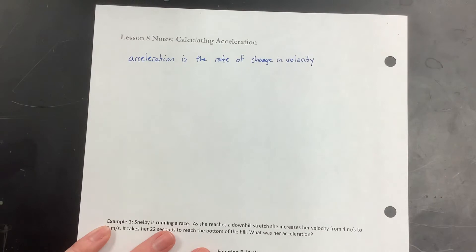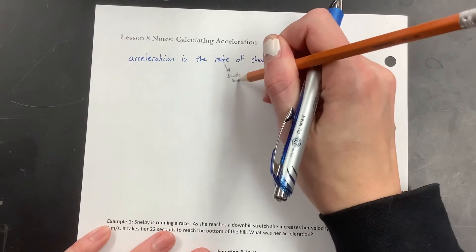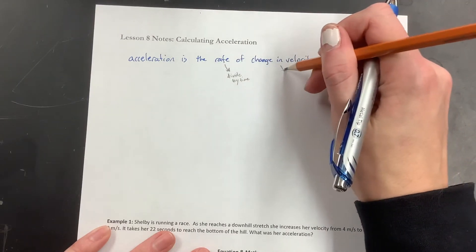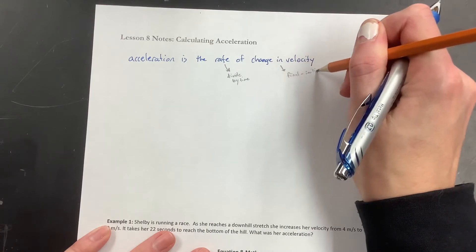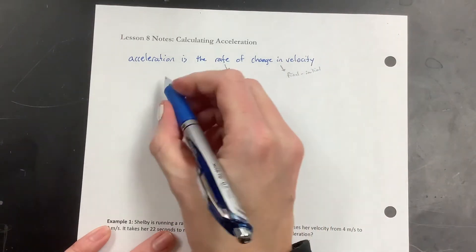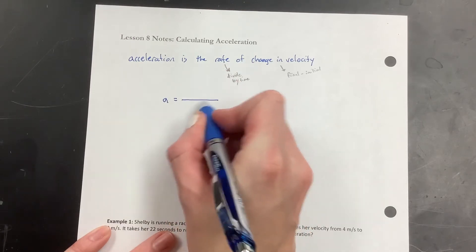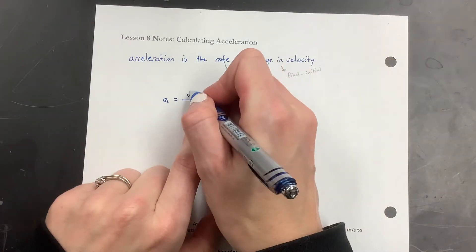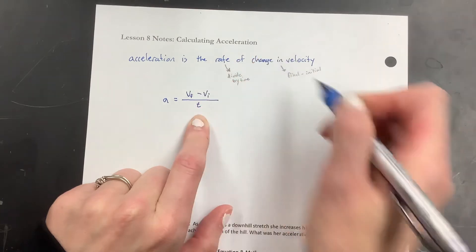So remember, rate means we're going to be dividing by time, and change in velocity means we're going to be looking at the final minus the initial. And so if I rewrite this as an equation, acceleration is something divided by time. So the final minus the initial, that's going to be my velocity, because it's the velocity that's changing.